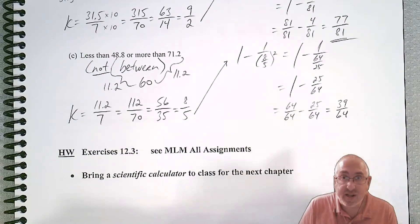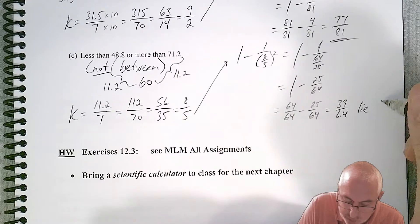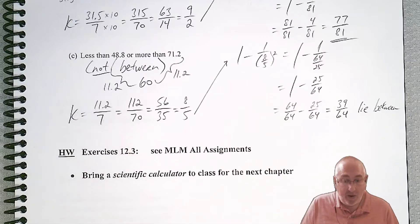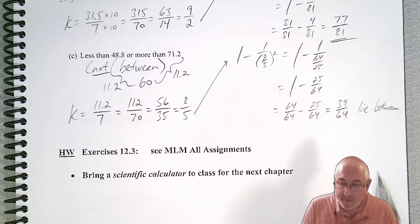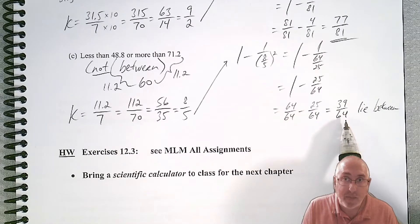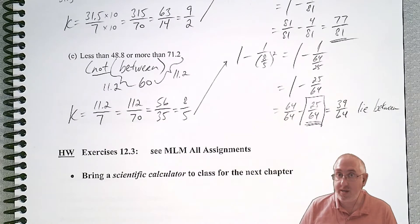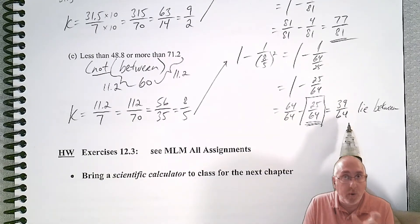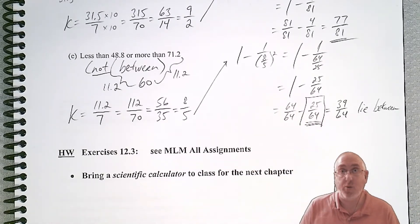Here's where the extra step is. Remember, this 39 over 64 is what's between those two numbers. If we don't want that, if we want what's not between, we want the leftovers. So if 39 out of 64 numbers lie between, then 25 over 64 is what lies outside. So a little tricky there, but just keep in mind that Chebyshev's only gives you what's between those two cutoffs. So the 25 over 64 is what lies outside.